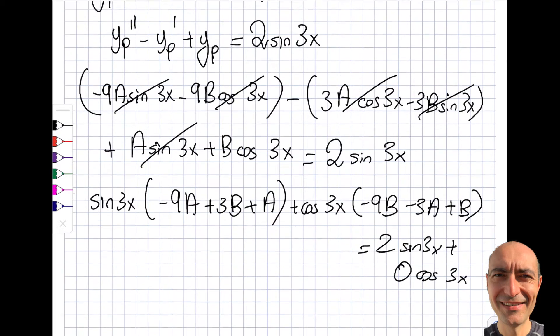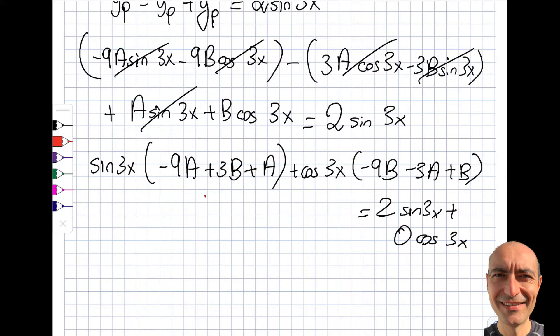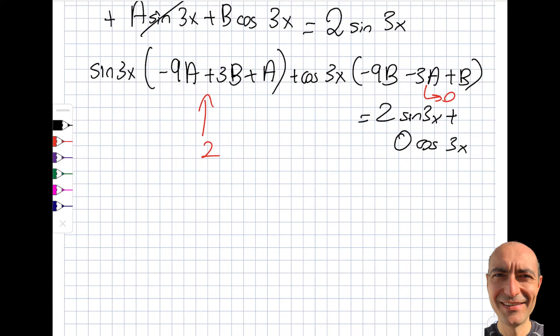You see what I did there, just to help you out. So then from here, this needs to be 2, this needs to be 0. And you can see I have two equations, two unknowns. So you can see minus 9a plus a is minus 8a plus 3b is equal to 2 from the first one.